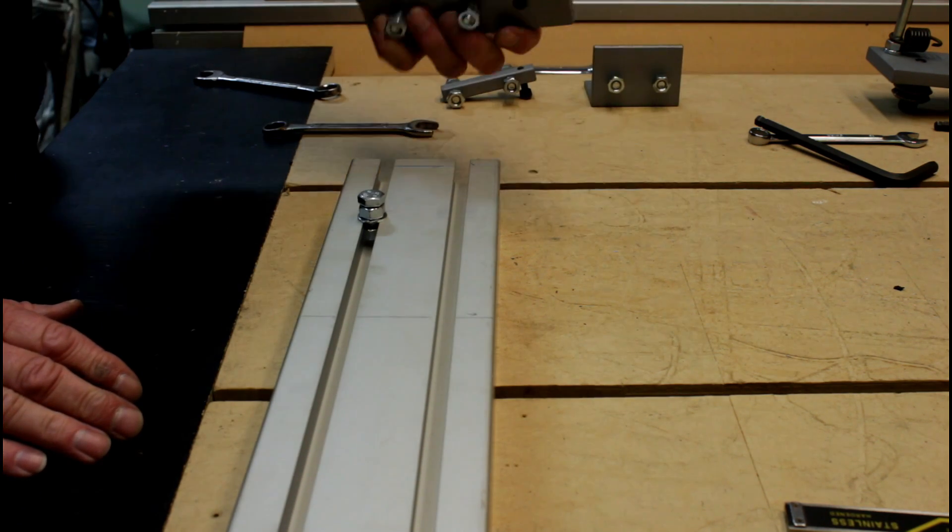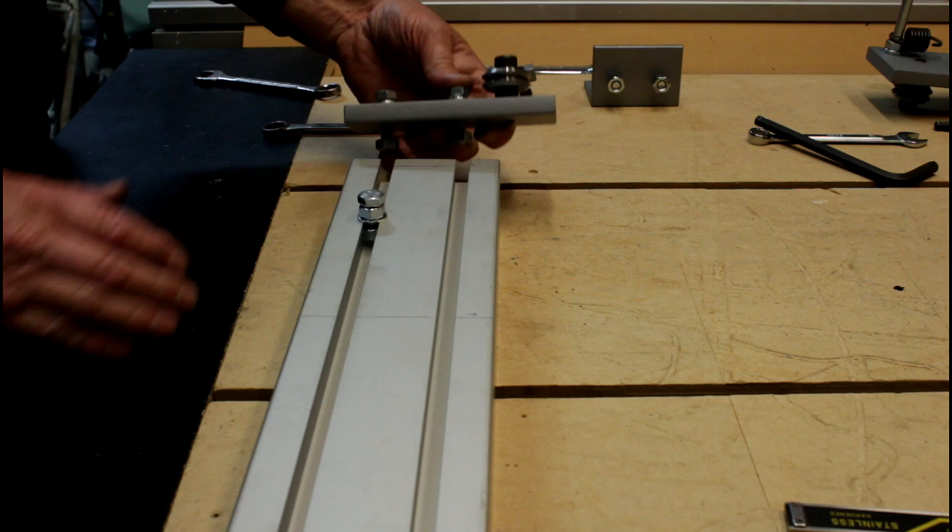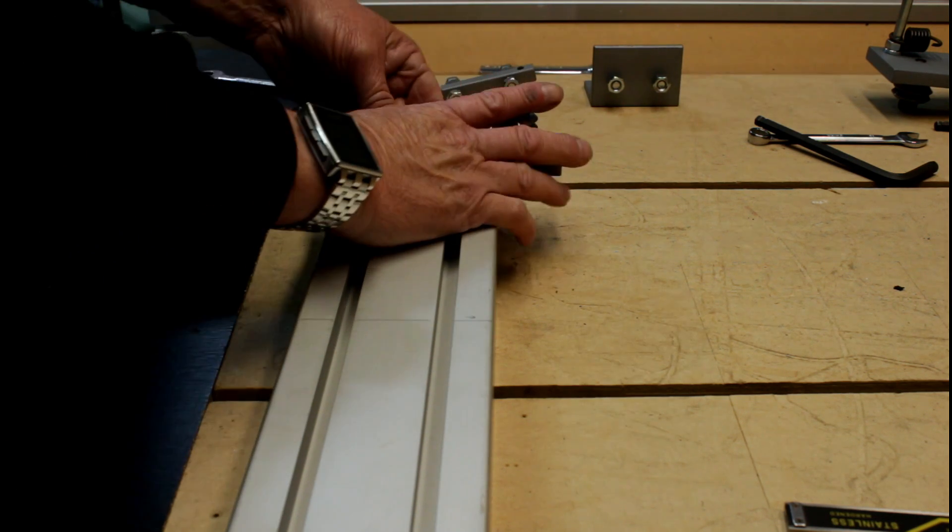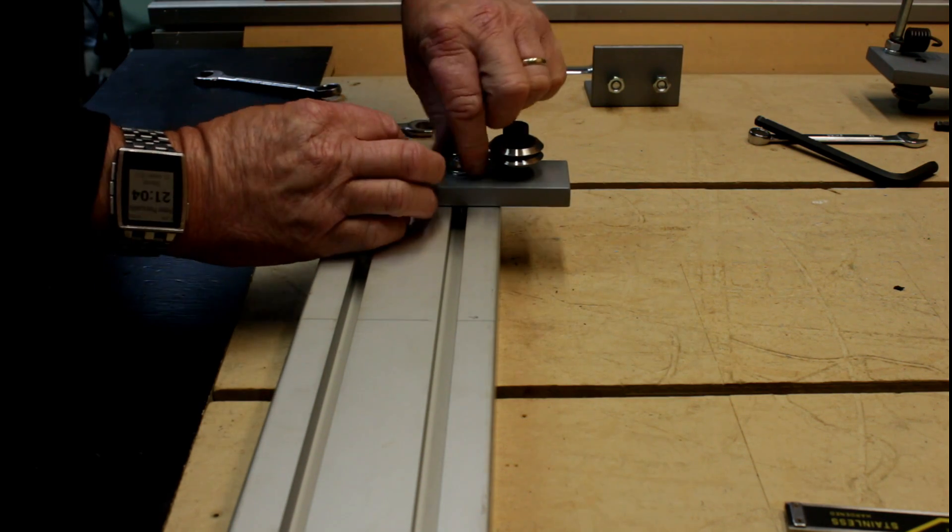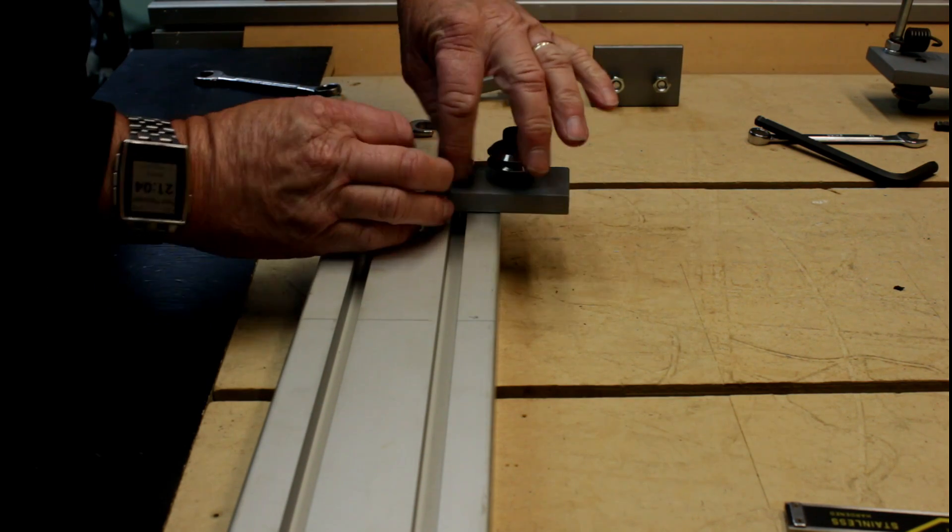The adjuster plate now slides into place, and the bolts are just lightly tightened up. They don't need to be tight at this point. The plate is allowed to move about.